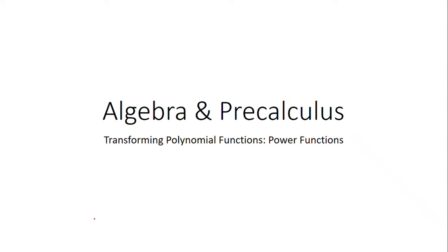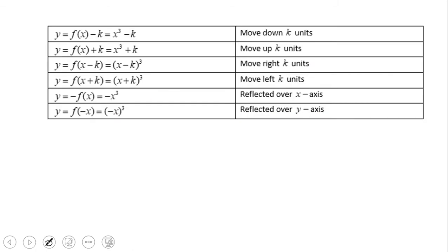Welcome back to C-Square. In this video we're going to look at problems related to transforming polynomial functions, specifically power functions. For the parent graph y equals x cubed: if we subtract a quantity outside, the graph moves down k units; if we add, it moves up. If we subtract inside the parentheses, the graph moves right.